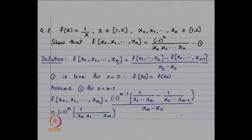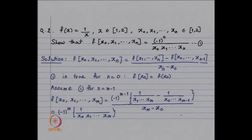For n = 0, one quickly sees the result is true. Assume the result to be true for n = m-1 and then using the recurrence formula for divided differences, one proves the result for n = m. The recurrence relation gives f[x_0, ..., x_n] as the divided difference based on x_1 to x_n minus the divided difference based on x_0 to x_{n-1}, divided by x_n - x_0. When n = 0, on the left we have f(x_0) and on the right 1/x_0, so the result holds.